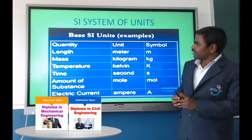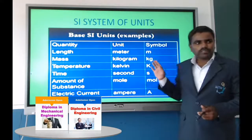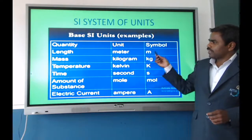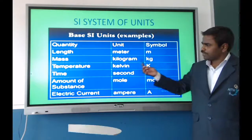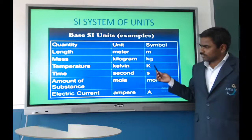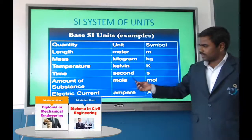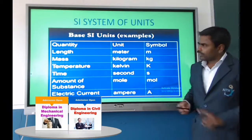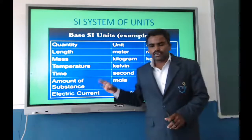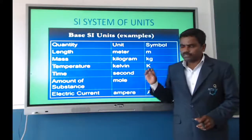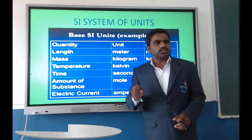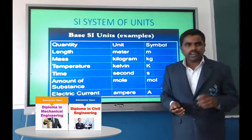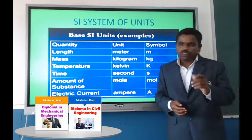Symbolically, we write these units as: meter (m), kilogram (kg), second (s), mole (mol), and ampere (A). By using these seven basic units, we can derive the units of other physical quantities.